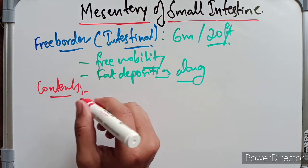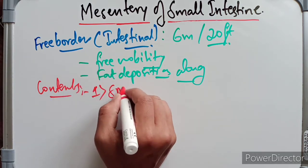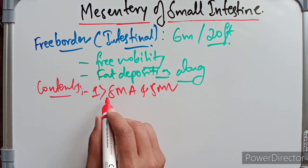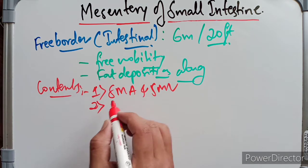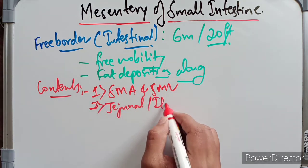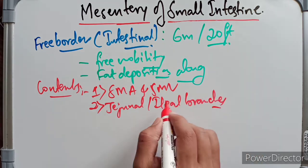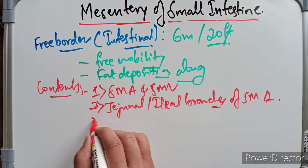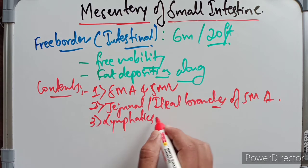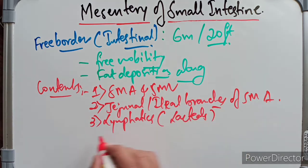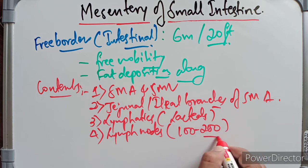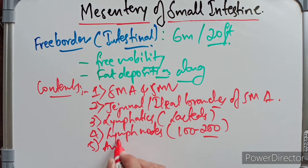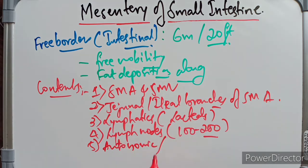The contents of the mesentery include: the superior mesenteric artery and vein — the vein lying to the right of the artery — the jejunal and ileal branches of the superior mesenteric artery, lymphatics or lacteals, lymph nodes which are around 100 to 200 in number, autonomic nerves, fat, connective tissues, and the jejunum and ileum enclosed in the free border.